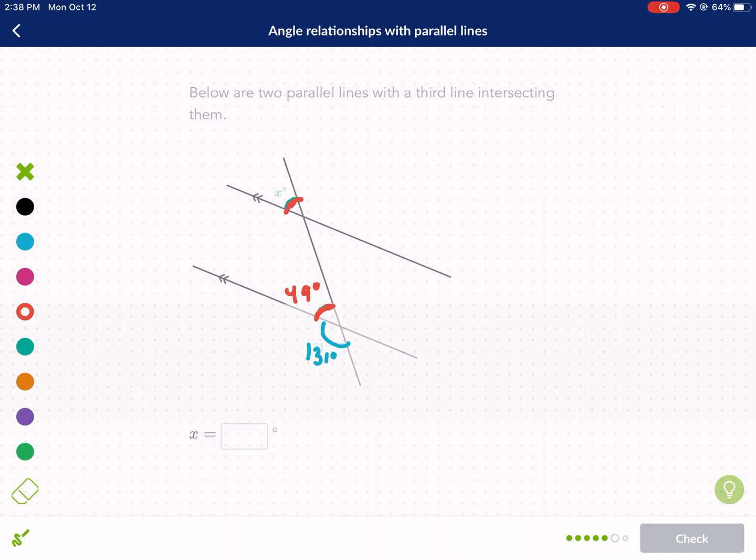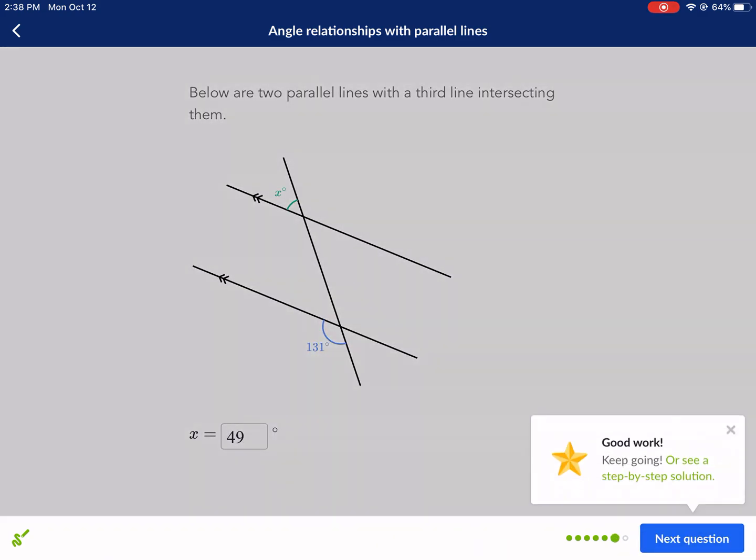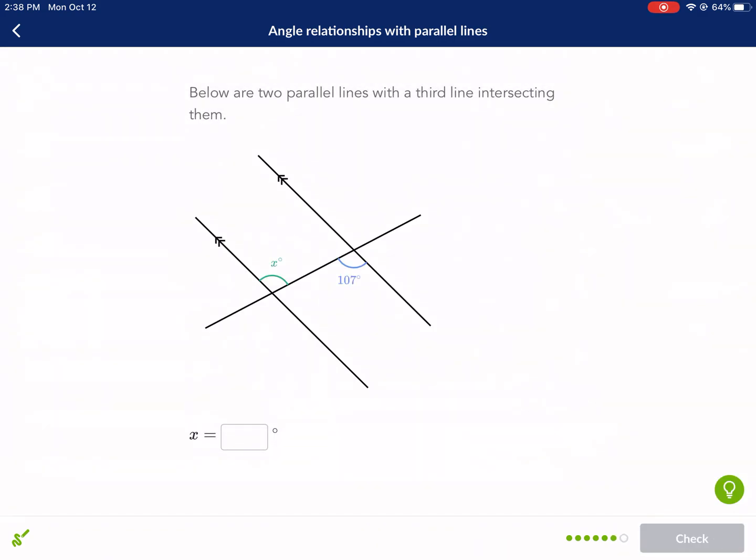And because this and this are in the same part of that intersection, these are in the upper left. I know that X is also equal to 49 degrees. But for whatever reason, they don't have a named relationship.